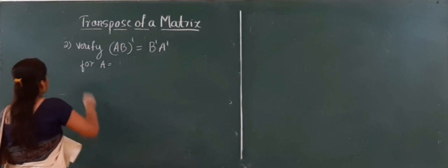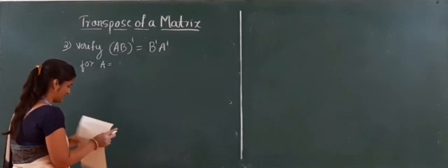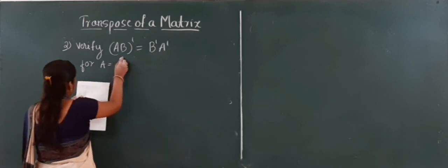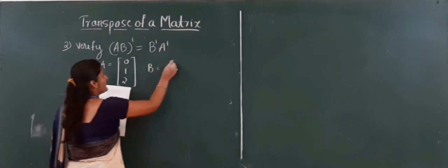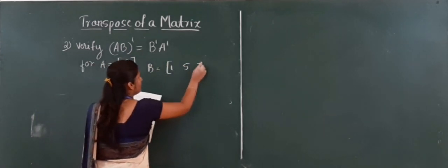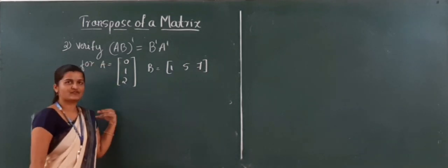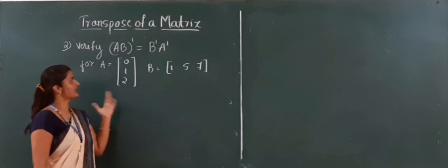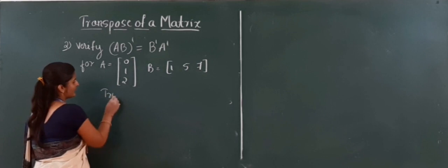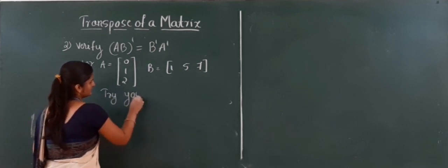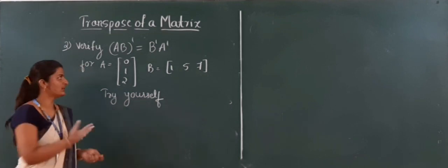The third problem asks to verify (AB)' = B'A' for A matrix equal to 0, 1, 2 and B matrix equal to 1, 5, 7. This is the same as the last problem — only the values in the matrices are changed. So you can try this yourself.